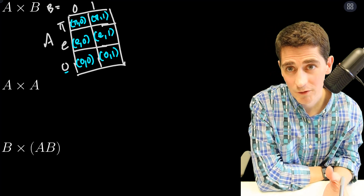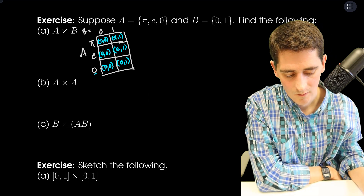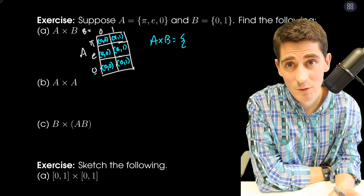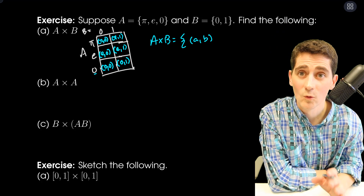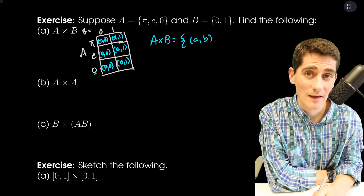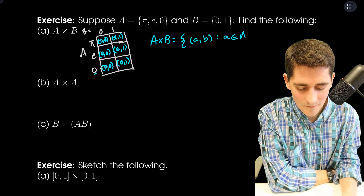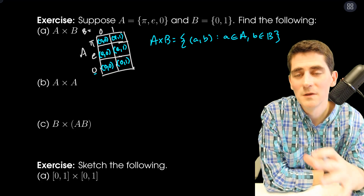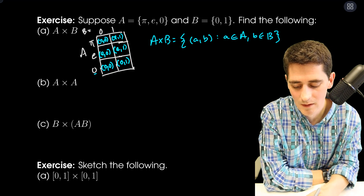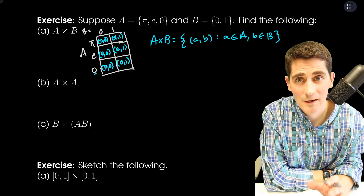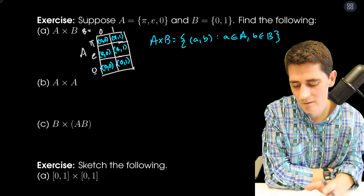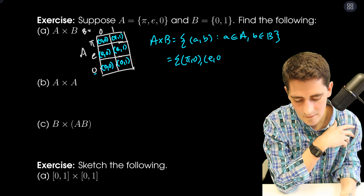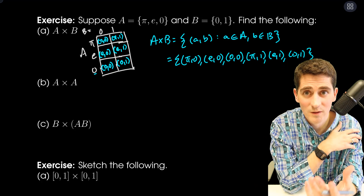It's worth writing out what we mean by Cartesian product. If I write A × B in set-builder notation, it's the set of ordered pairs (a, b) where the order does matter — the first thing comes from A and the second thing comes from B, where little a is from A and little b is from B. So A × B looks like {(π,0), (π,1), (E,0), (E,1), (0,0), (0,1)}.